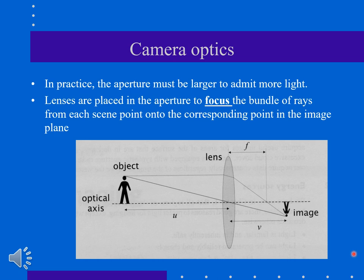Lenses are placed in the aperture, in the opening, to focus the bundle of rays from each scene point onto the corresponding point on the image plane. This location where we have the lens is actually the aperture, because the rays will pass through that. Remember you have the focal point - that's f - the distance between the lens, the center of the lens and the focal point, and the distance of the object.